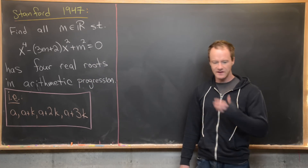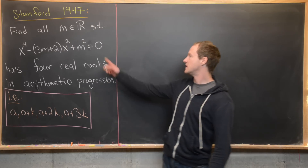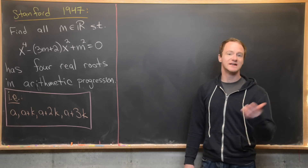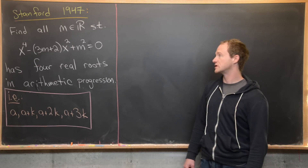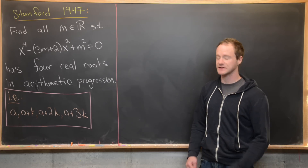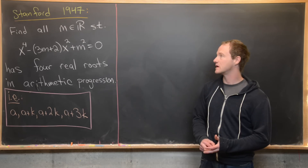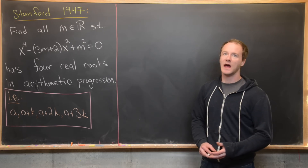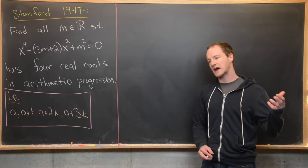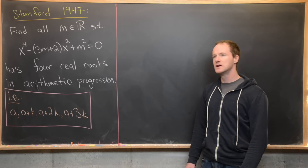There are two main starting approaches. The first is to notice that the equation is a quadratic in x², apply the quadratic formula, and get an expression for x² involving radicals.